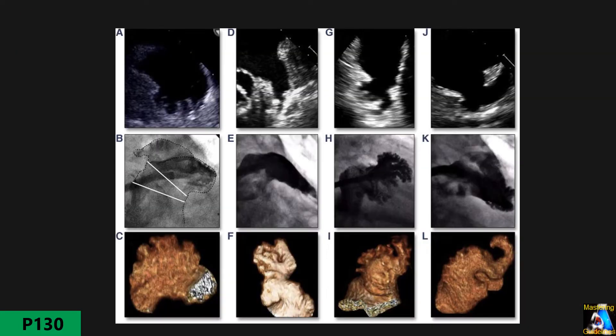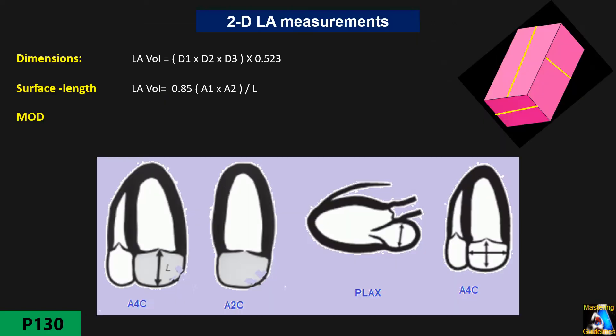Here we can see different shapes of the left atrial appendage on transesophageal echo, contrast CT scan, and 3D mode. You can see that the shape varies completely from patient to patient, with different shapes and sizes.